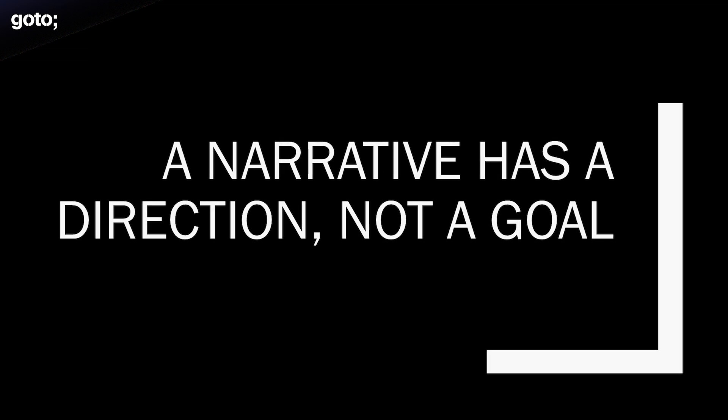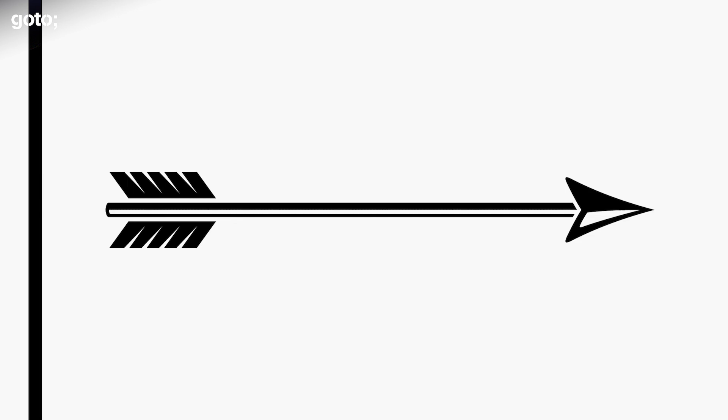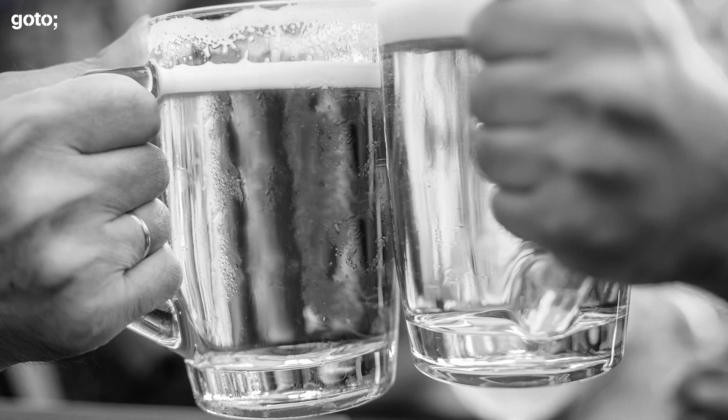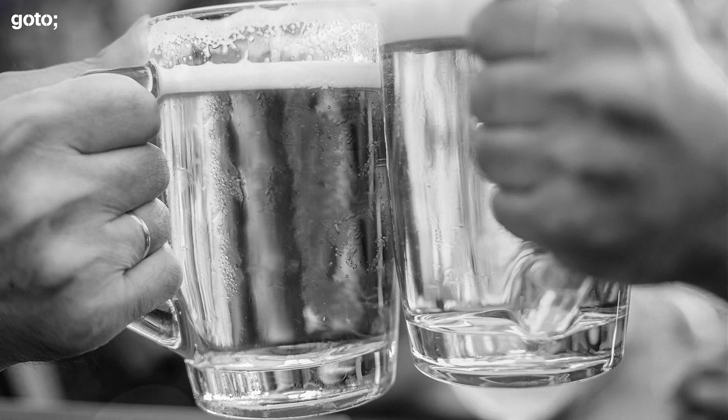First off, a narrative has a direction, not a goal. I know they say it's important to have goals. But personally, I've given them up. Instead, I try to have some heuristics, or arrows, that indicate when I'm headed in the right direction. For instance, instead of thinking about the job I want to have, I have a mental list of people I'd like to have a beer with someday. And then I think, what sort of person would I become in order to be in their circles? What kind of work in the world would I need to be doing to find myself hanging out with them?